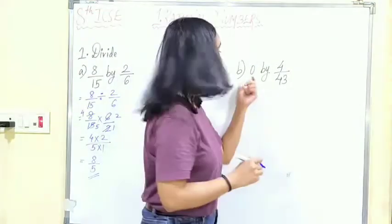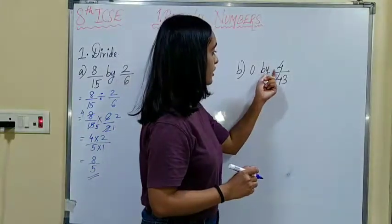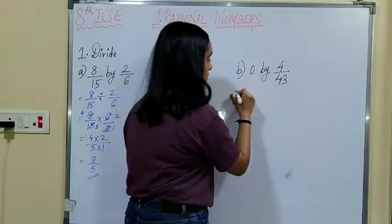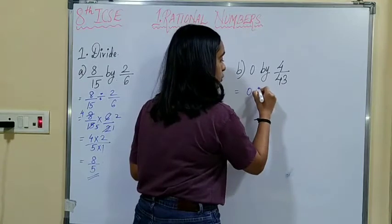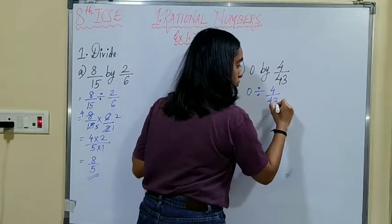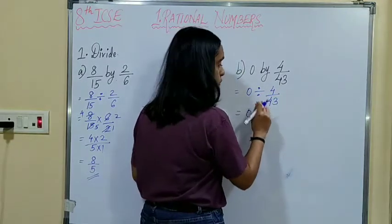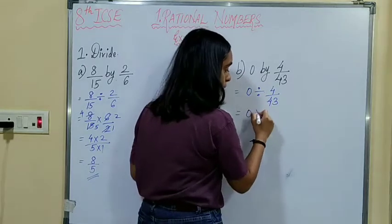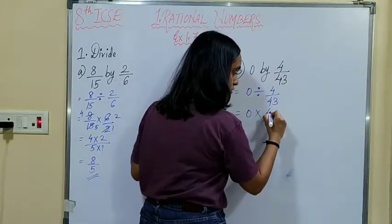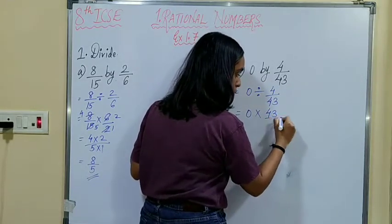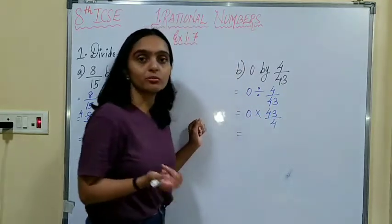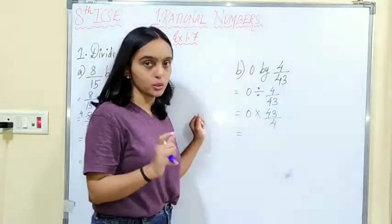The next question is 0 divided by 4 upon 43. That is 0 multiplied by the reciprocal of 4 upon 43, which is 43 upon 4. And you know, 0 when multiplied by any number is 0. So 0 multiplied by this rational number is 0.